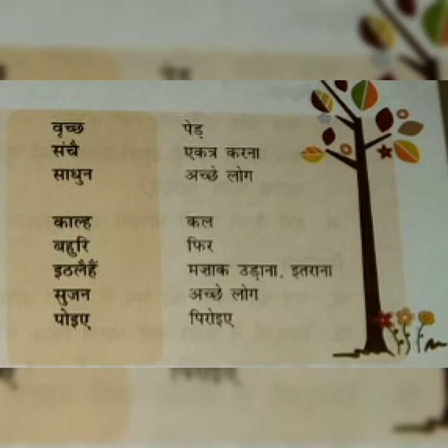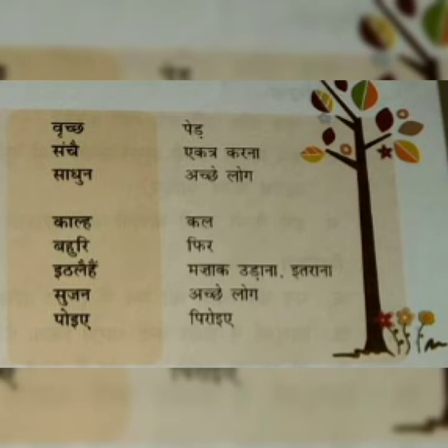Kal means tomorrow. Bahuri means phir, again. Itlehain means maza karna — making fun of others. Sujan — the actual word is sajjan — means achhe log, good people. Poiyye means piro ye, like threading a garland — it means to thread.